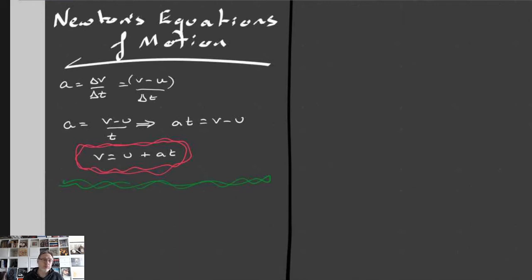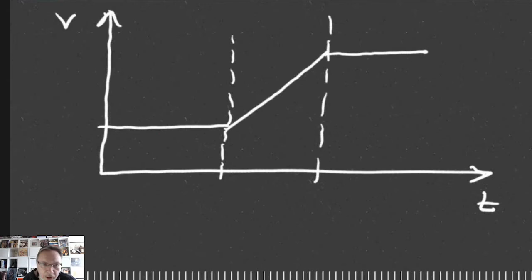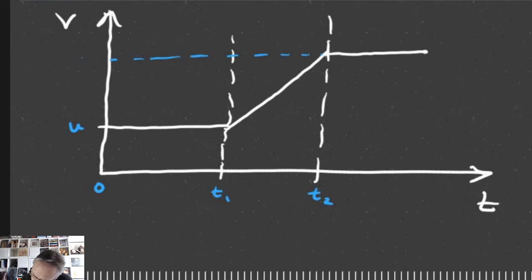There are two different ways of generating the equations of motion — using graphs and using mathematics. Let's look at graphs first. Imagine an object traveling at a certain constant velocity for a period of time, then it speeds up to a new velocity. Let's say the initial velocity is u, and the final velocity is v, with the acceleration phase running from time t1 to t2.